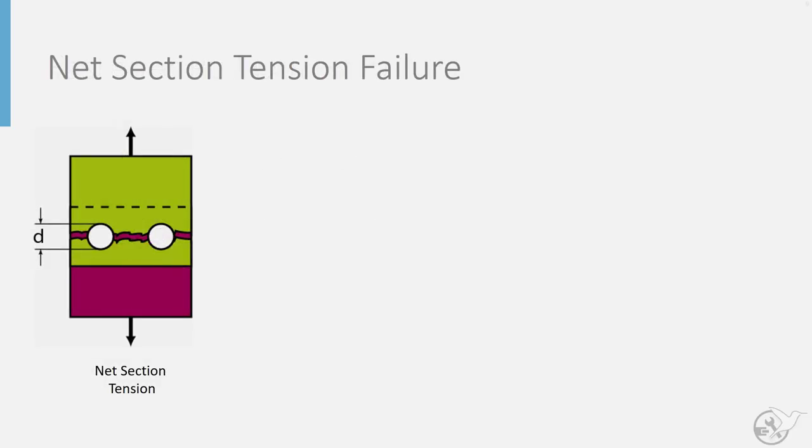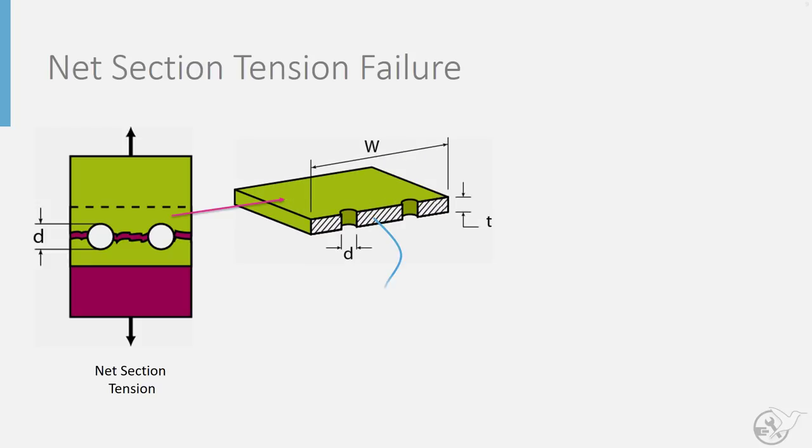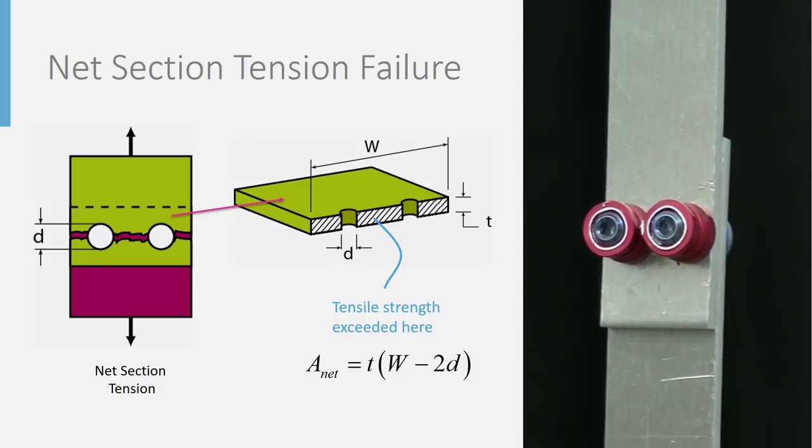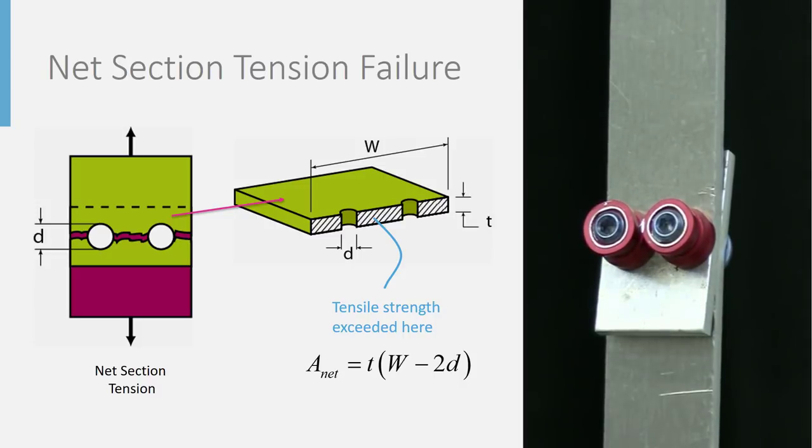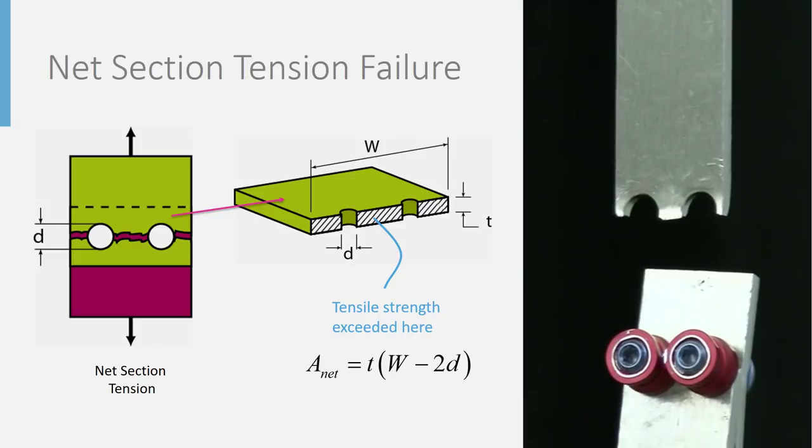The first of the sheet failure modes we will look at is net section tension. This failure mode is a consequence of the tensile strength of the sheet being reduced by the row of holes drilled into it. The remaining cross-sectional area of sheet along these rows, or net section, is smaller than that of the total cross-sectional area of the sheet, but has to carry the same overall load. As a result, this net section region can fail earlier than the rest of the structure.